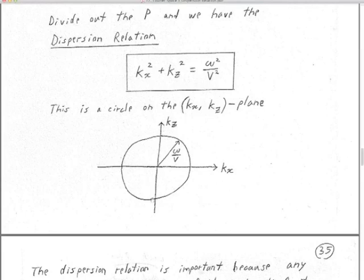We played around earlier this semester with unit circles in the complex z-plane — this is not that, but it's another circle. This is why practically everything I do essentially boils down to trigonometry, because I keep finding these circles. Now we're in this bizarre Fourier transform domain kₓ and kz, not the z-plane, and everything's still based on a circle. Any acoustic constant-velocity wave field is going to satisfy that dispersion relation.